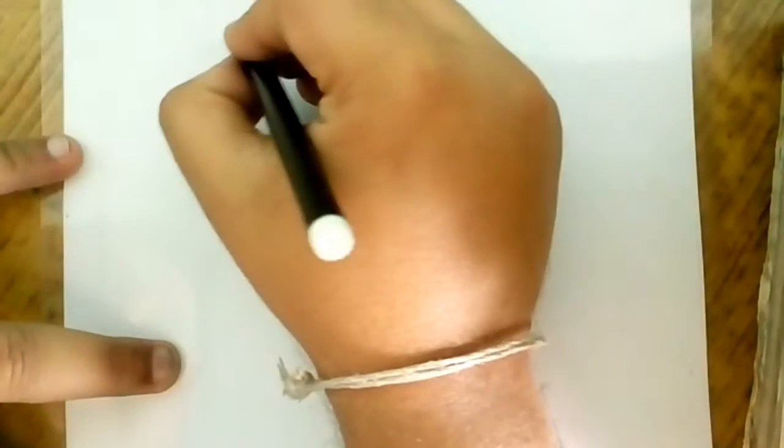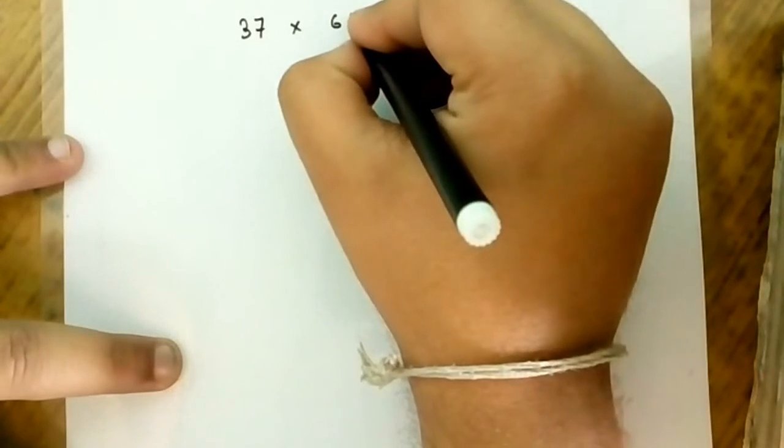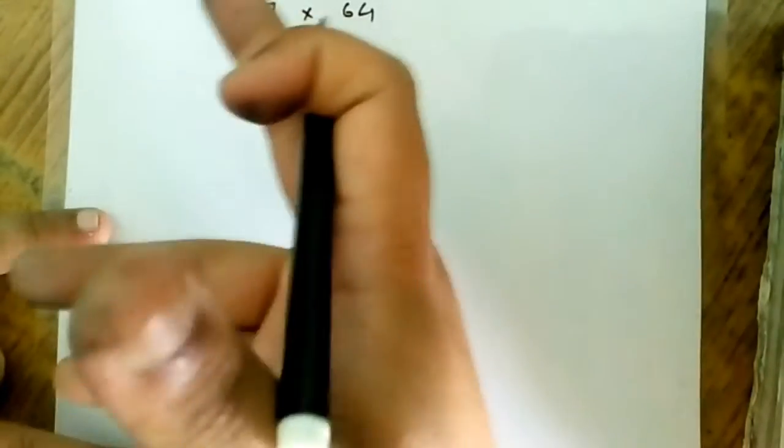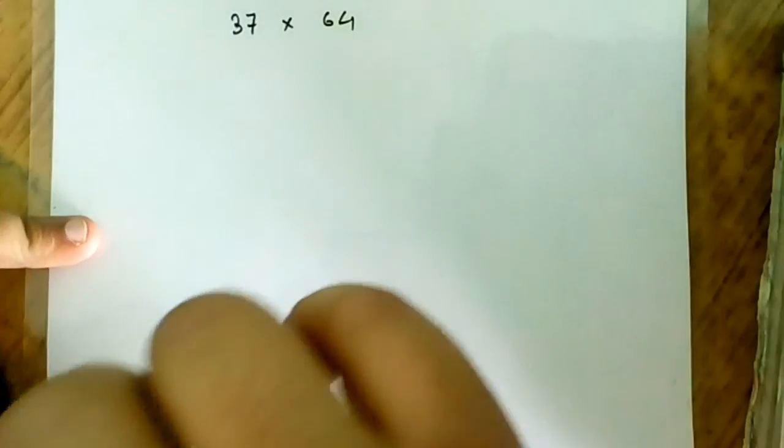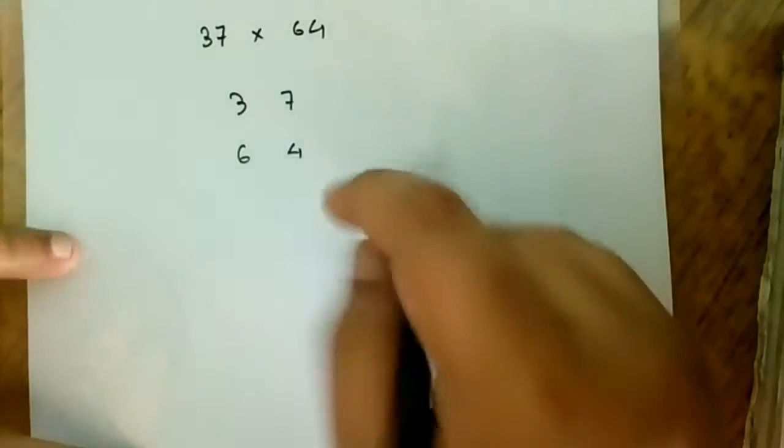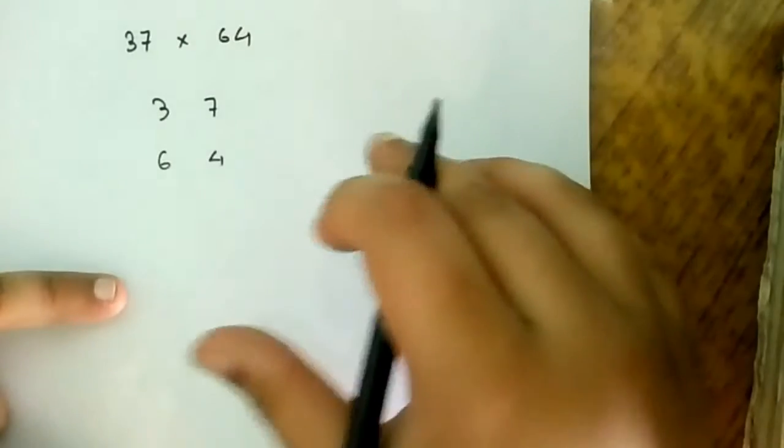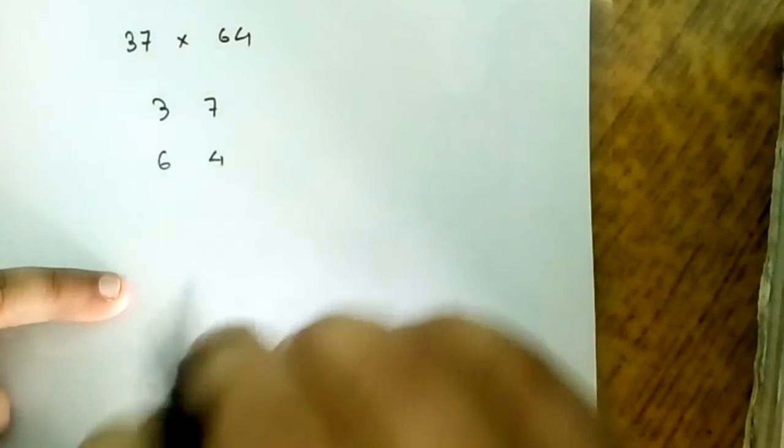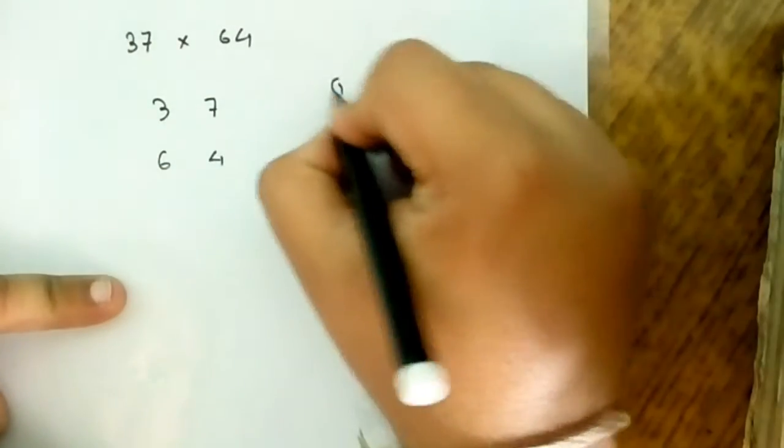Let us consider any two digit number: 37 into 64. Any random number you can choose. I choose 37 and 64. The basic rules to solve this type of question: first one is down to up, and then the next one is crossword.